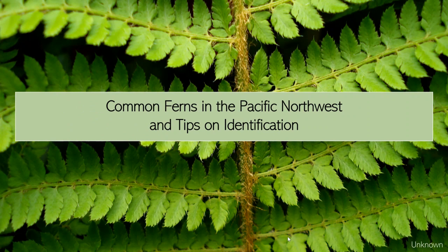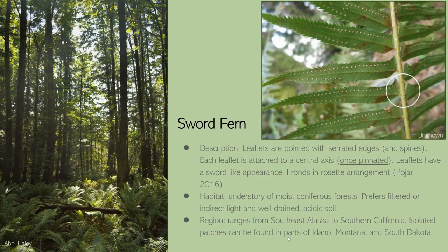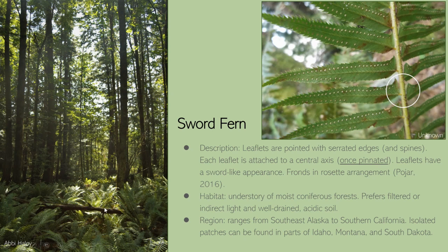Moving on, we're going to do a quick overview of ferns in the Pacific Northwest and how you can confidently identify them. The most common one is going to be the sword fern. It has these characteristic pointed leaflets or pointed pinnae that really do look like a sword. You'll notice the edges are serrated and they have these spines protruding — that's a pretty characteristic feature of a sword fern. Sword ferns are also some of the biggest ferns we see, and they often have these hair-like features on that central axis. You'll see them in the understory of moist coniferous forests — they prefer filtered indirect light and a well-drained, more acidic soil.